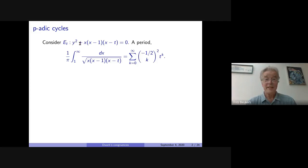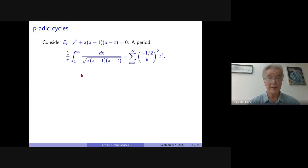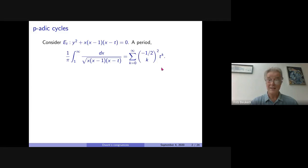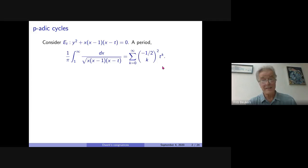What Dwork did was take the Legendre family of elliptic curves given by this equation. As you know, there's a unique holomorphic differential form which you see here. If you take its period, for example by integration from one up to infinity, it becomes a function of t because t is a parameter. If you expand in t, you get this power series expansion, and you may recognize this as the most classical hypergeometric function that everybody knows. This is the first example people see in books on periods of algebraic varieties and Picard-Fuchs equations.